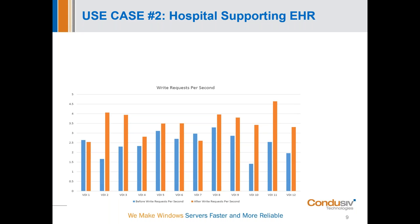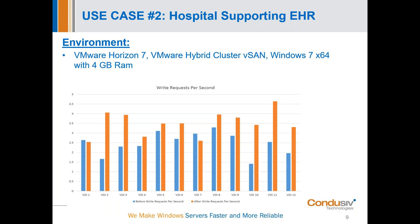Let me turn this over to Howard to take you through this first use case from one of our hospitals — a VMware Horizon 7 environment running VDI. This is tested with VMware's vROPS — another third-party tool. Thanks, Jennifer. Let's take a quick look at what IO transformation with Velocity can do. The nice thing is that we can validate this with third-party tools you probably already have in your environment, like vROPS, which is what we used at this particular hospital. The orange lines represent data measurements with Velocity, and we can see a nice trend of improvement in write requests per second.